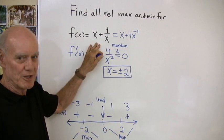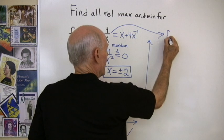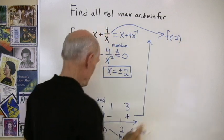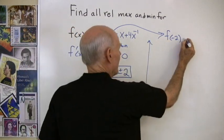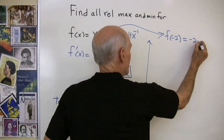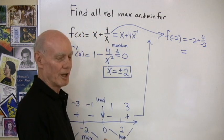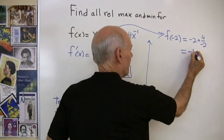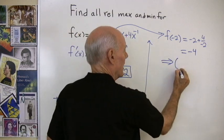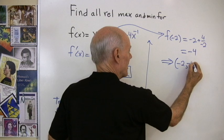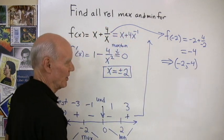I have to go back to my original function and find f of negative 2. So I'll take negative 2 for x, put it back into the original function, and I get negative 2 plus 4 over negative 2. That's going to be negative 2 plus negative 2, which is negative 4. So that tells me that the point x equals negative 2, y equals negative 4 is a relative maximum.